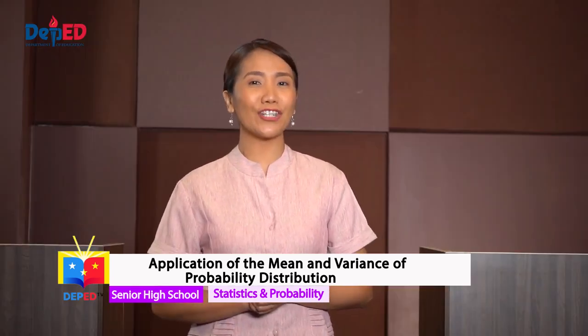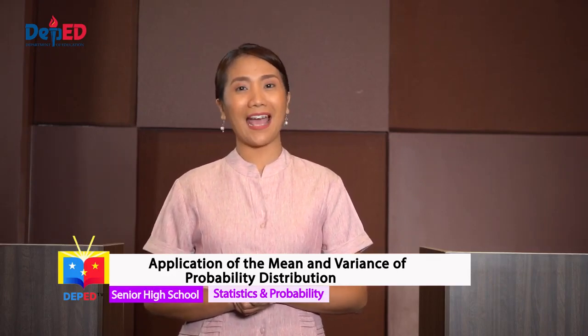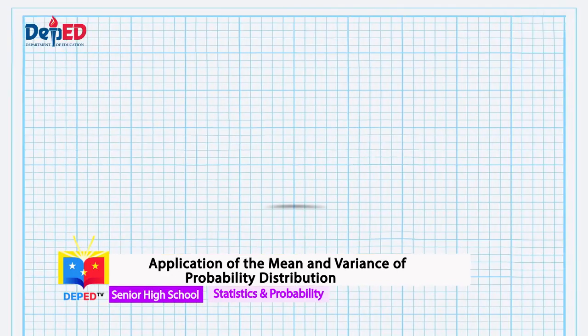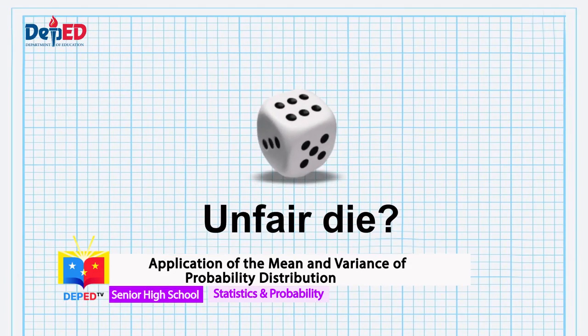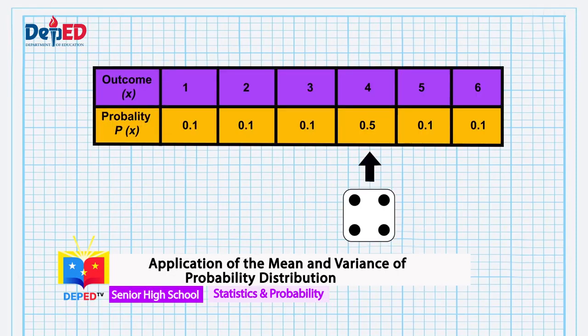Were you able to get the right decision in the two problems? That's alright if you didn't get both, as we are just having our warm-up. Have you heard of an unfair die? There is such a thing as an unfair die — this happens when one face of a die has a greater probability of occurring than another. Suppose an unfair die is rolled. We will let x be the random variable representing the number of dots that would appear with the probability distribution. The face of a die that is favored is the face having four dots because it has the highest probability.